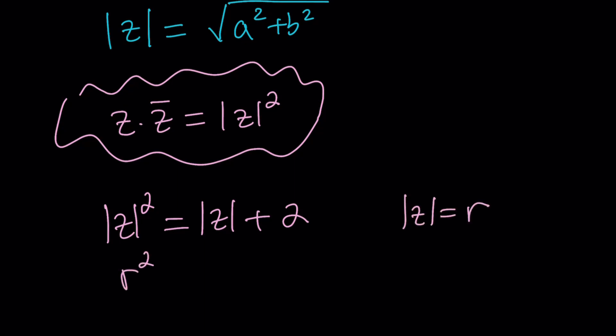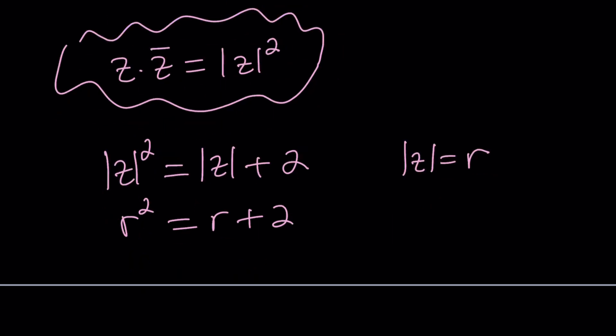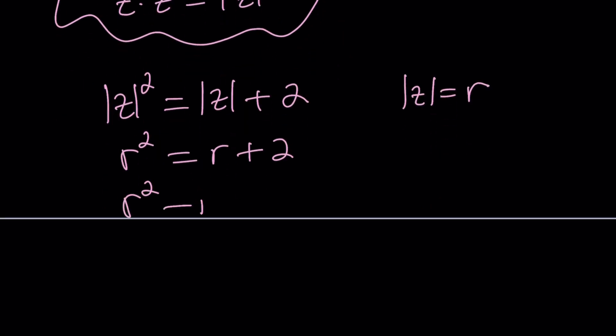Which is quadratic. Put everything on the same side. Use the formula or you can factor this equation into R minus 2 and R plus 1 equals 0. One thing to keep in mind, the absolute value of a complex number, even a complex number, cannot be negative. And if it's zero, then of course the number itself has to be zero identically.